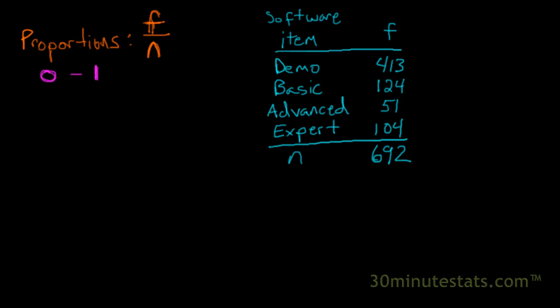To calculate them, we can use an example dataset here where I've got the software sales for the last month from a company. We can see that they've got four different software items that they sell: a demo version which is free, then a basic, an advanced, and an expert level. They sold 692 units total, so their sample size is 692 in the last month, of which 413 of those sales were demo units, 124 basic, 51 advanced, and 104 expert.